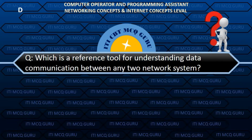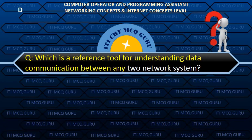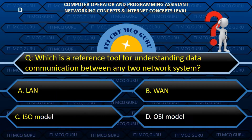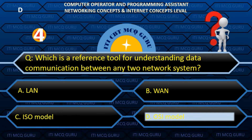Which is a reference tool for understanding data communication between any two network systems? D. OSI model.